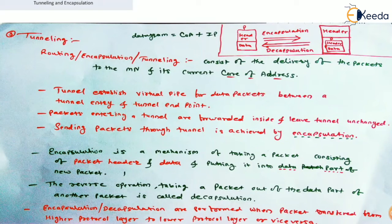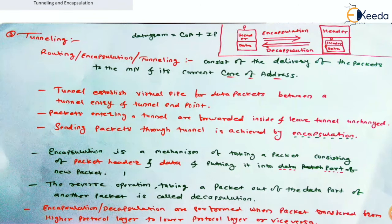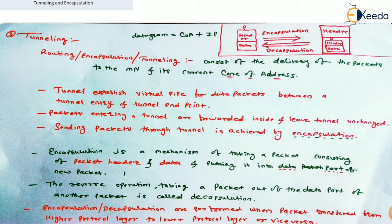This care-of address will be the end of the tunnel. Tunneling can also be called routing, because information is routed to the original mobile node. It is also called encapsulation, because an encapsulation mechanism is used. This procedure consists of delivery of packets to the mobile node at its current care-of address. So tunneling is the mechanism in which packets are delivered to the mobile node using its care-of address. Tunneling establishes a virtual pipe for data packets between a tunnel entry and tunnel endpoint.